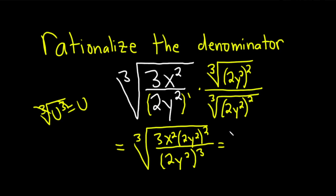So this is equal to the cube root of, break it up into two cube roots now, 3x squared, and then 2 squared is 4 and then y squared squared is y to the fourth, over, and then on the bottom the cube root of this is just 2y.